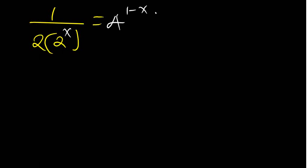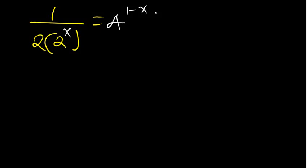In this tutorial, we are going to solve a very interesting question. The equation is: one over two, open brackets, two to the power x, close brackets, is equal to four to the power one minus x. Find — solve for x.